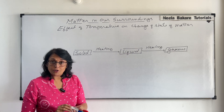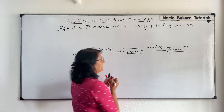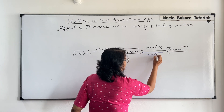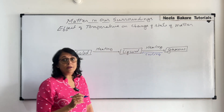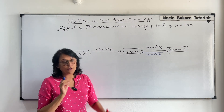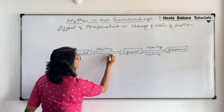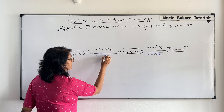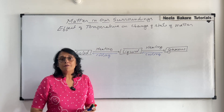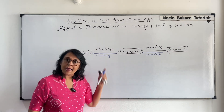The reverse is also possible. Here we were increasing the temperature. Now, if we decrease the temperature, the gaseous state will change into liquid — this is cooling. If we cool the gaseous substance, condensation will take place and we get liquid water. Further cooling results in the formation of ice. So by increasing or decreasing the temperature, we can change states from solid to liquid, liquid to gas, and reverse.